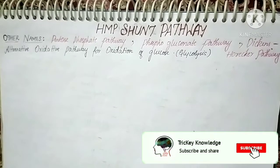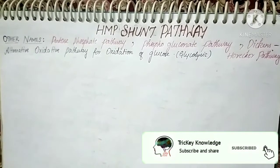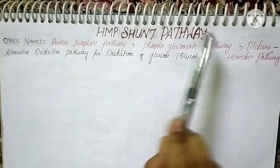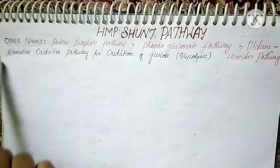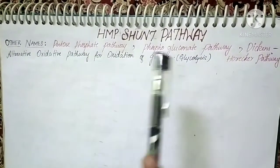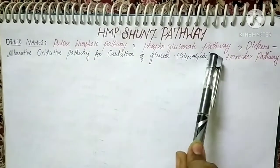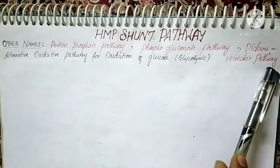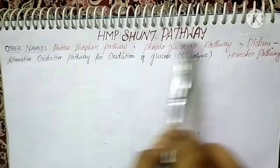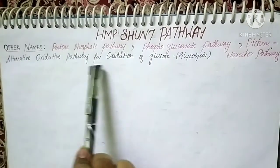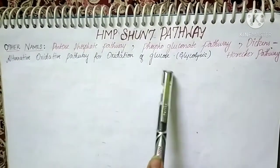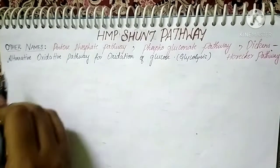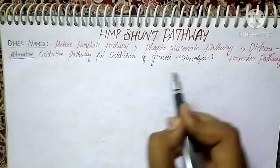Hello friends, welcome to Tricky Knowledge channel. Now let's see about the HMP pathway. Other names for this pathway are the pentose phosphate pathway, phosphogluconate pathway, and Dickens-Horecker pathway. It is an alternative oxidative pathway for oxidation of glucose — meaning an alternative to the glycolysis pathway.